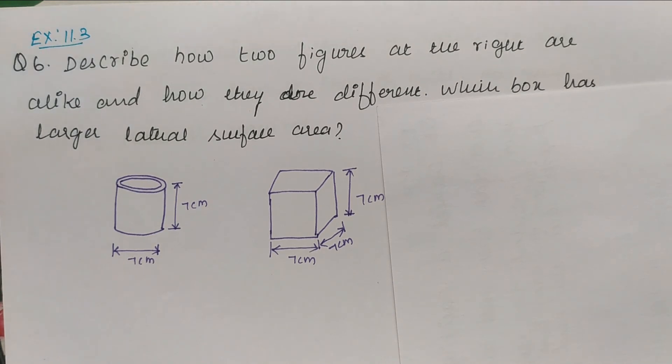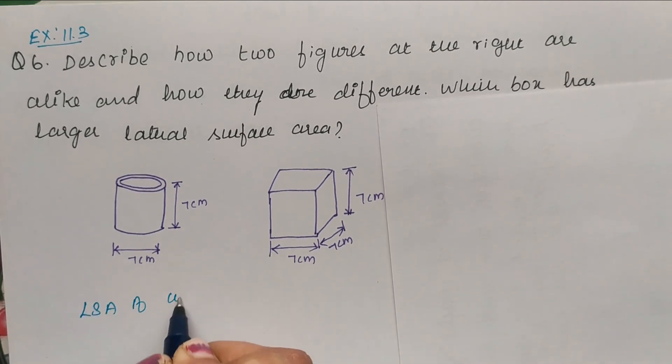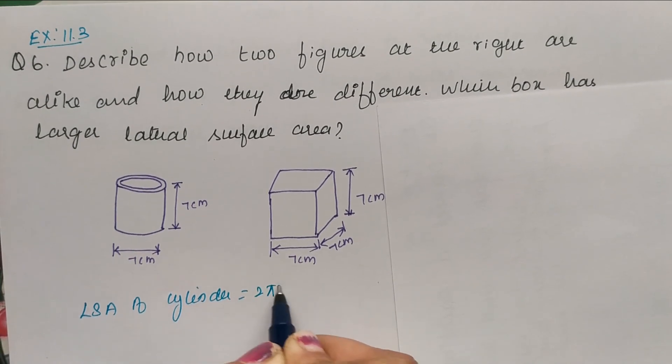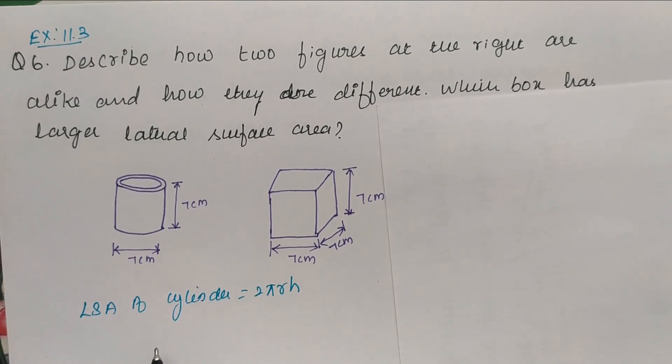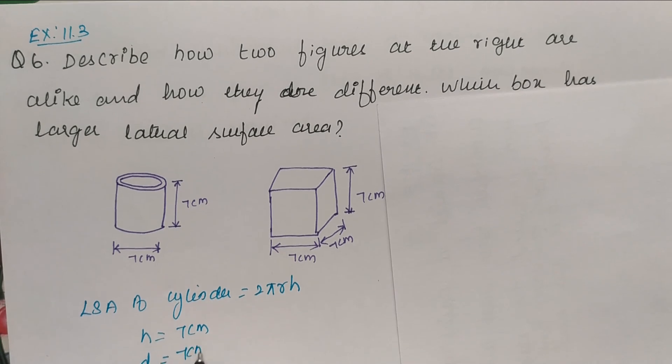Now let us find the lateral surface area of cylinder and cube. Lateral surface area of cylinder is 2πrh. Height is 7 cm and diameter is 7 cm.